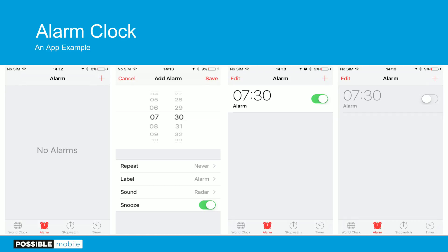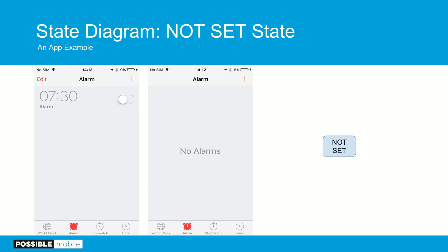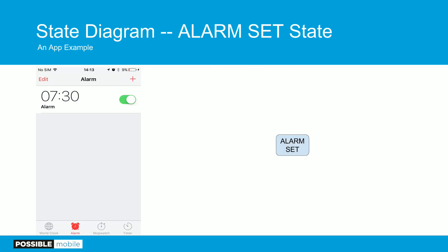How are you going to actually test an app like this? The way I would do it is something like a flow diagram or state diagram — if you come from engineering, a finite state machine or user flow diagram. How do you construct one? Start with having no alarm set — my first state in the app. I'm collapsing these into one state right now: no alarm set, meaning at no point is an alarm ringing.